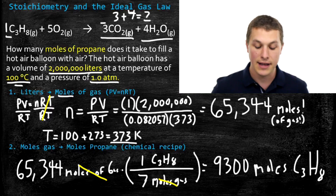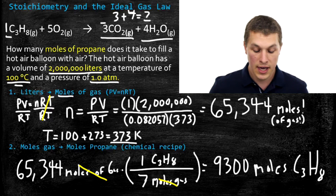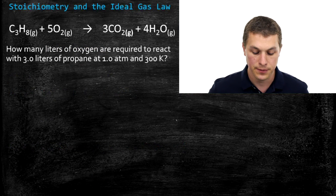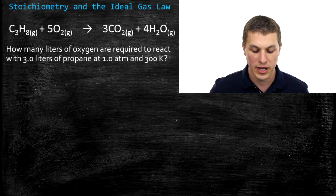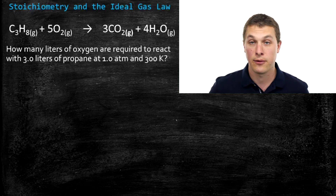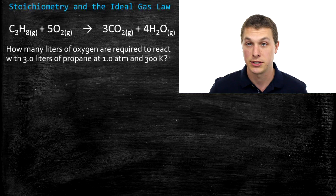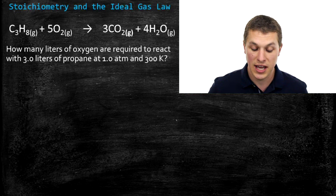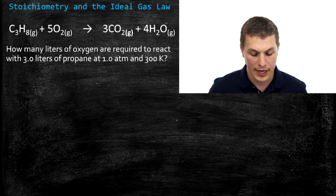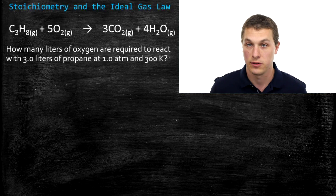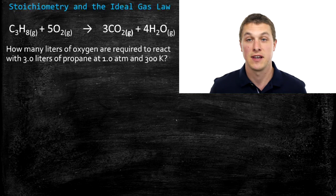Here we've combined the ideal gas law to go between liters and moles, and stoichiometry. We're going to do one more example using this same reaction, this time with smaller numbers. The problem asks: how many liters of oxygen are required to react with 3 liters of propane at 1 atm and 300 Kelvin? The given pressure and temperature are hints we'll need the ideal gas law, and it applies here because oxygen and propane are both gases.